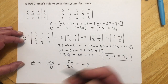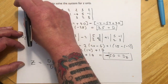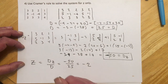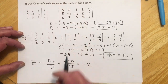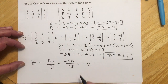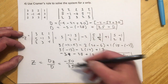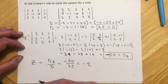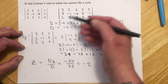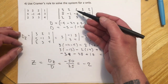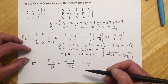If I wanted X and Y, I could replace the appropriate column and find Dx and Dy as well. But on my tests, solving for z is plenty. I don't care which method you use on the exam, but it is good to know both methods.